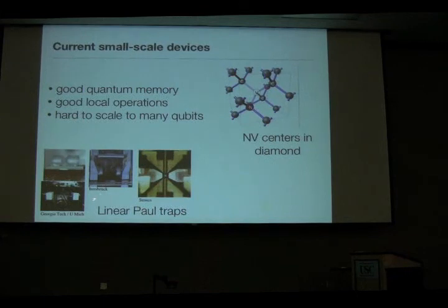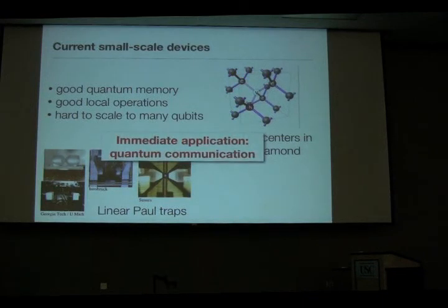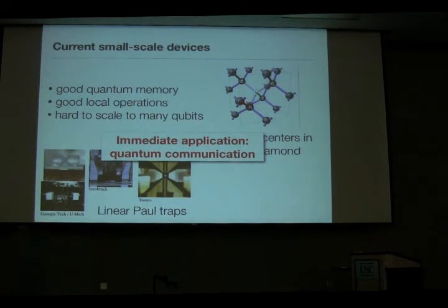In the Paul trap systems there are multi-zone trap approaches which I think are very promising. But I'm going to focus on what's actually been done in experiment in these linear Paul systems. The idea is that I'm going to focus now on some immediate application, which is quantum communication, and then, as time allows, talk about some longer-term applications in computation.